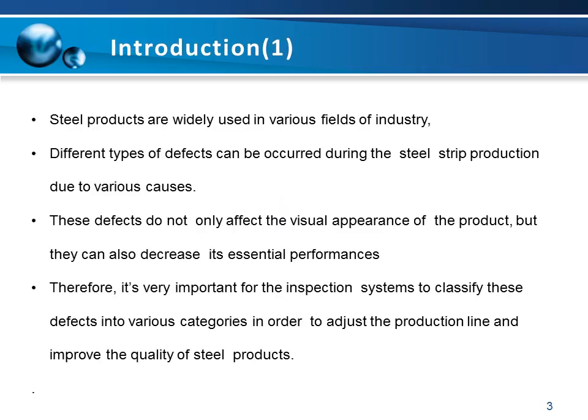Steel products are widely used in various fields of industry such as aerospace, automobiles, building materials, military defense, and machinery. However, during the steel manufacturing process, the quality of those products can be affected by the presence of some surface defects. Those defects do not only affect the visual appearance of the product but they can also decrease its essential performance.